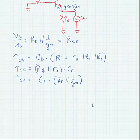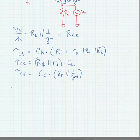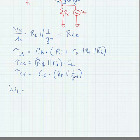Now, to find the low frequency response, we need to sum the inverse of these. So, omega L is simply equal to 1 over tau CB plus 1 over tau CC plus 1 over tau CE. And that's an example of using short circuit time constant to find the low frequency response of an amplifier.